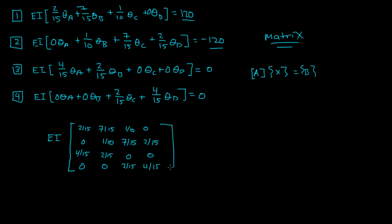So this is your matrix, and then your unknowns. Remember theta A, theta B, theta C, theta D. And that's equal to 120, negative 120, 0, and 0, right?